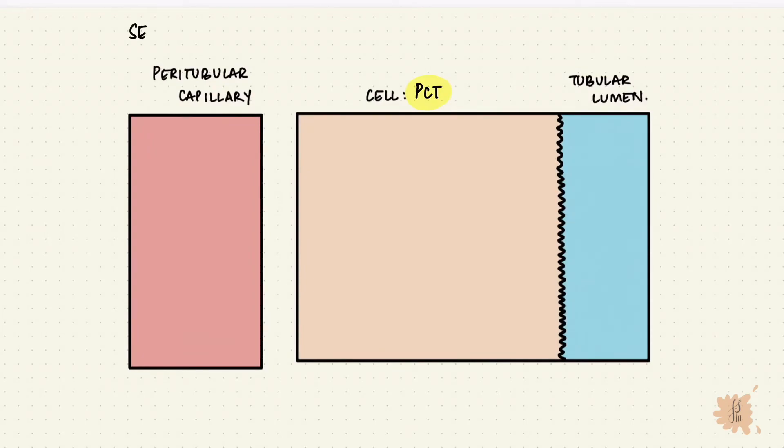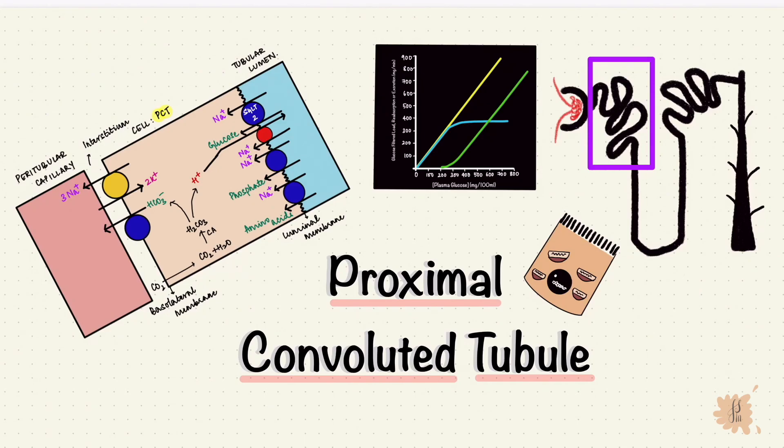That's about reabsorption, but what about secretion? Though the PCT does majority of the reabsorption, it also secretes some organic acids and bases, like bile salts, urates, and also paraaminohippuric acid, PAH, whose clearance measurement is used to determine renal plasma flow. And that is the proximal convoluted tubule.